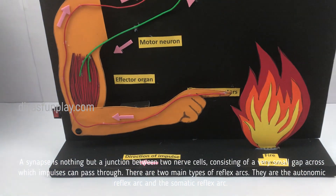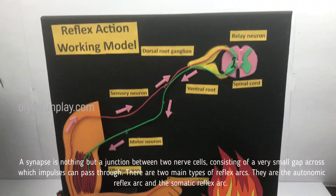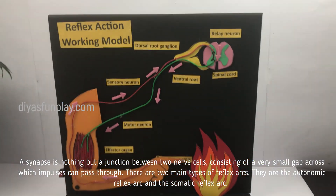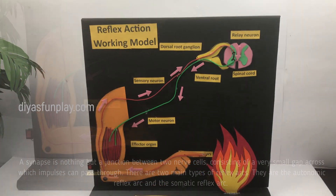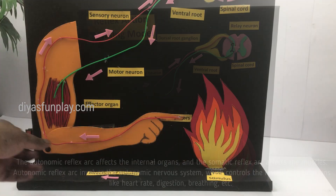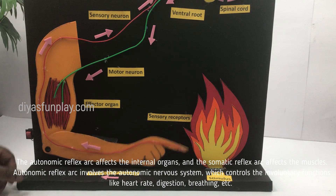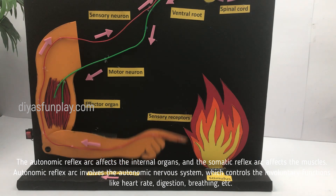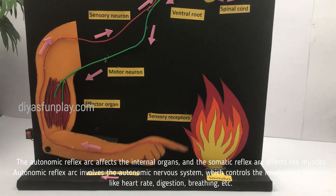There are two main types of reflex arcs. They are the autonomic reflex arc and the somatic reflex arc. The autonomic reflex arc affects the internal organs and the somatic reflex arc affects the muscles.